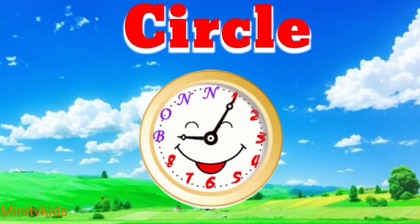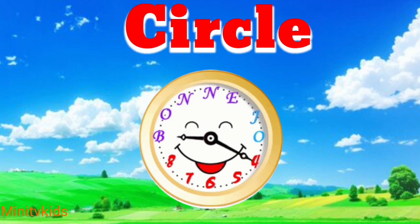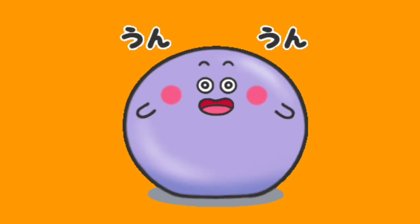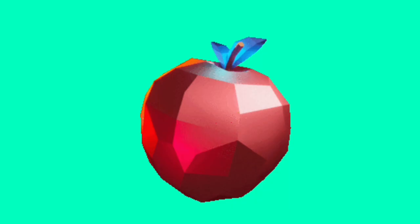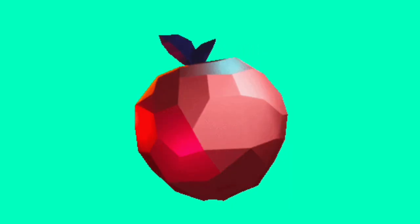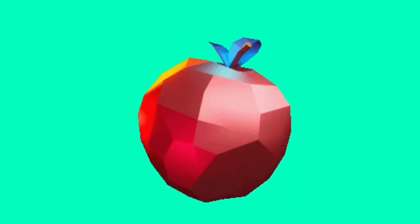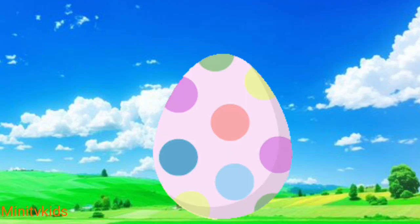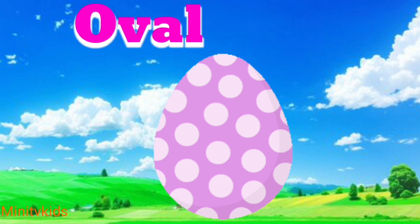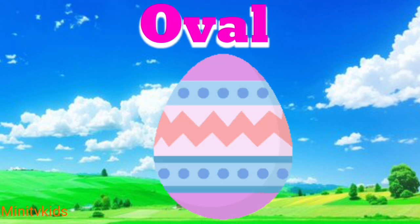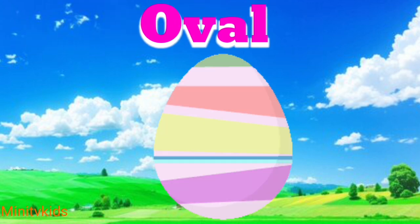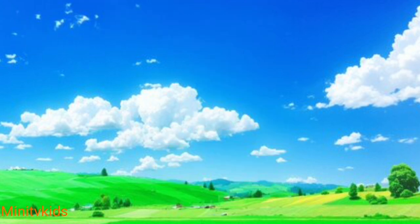Circle means ghanakar. Oval means undergar.